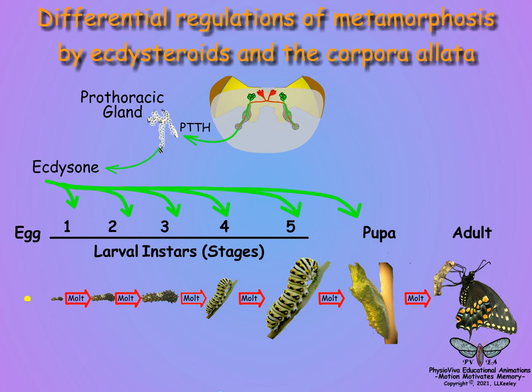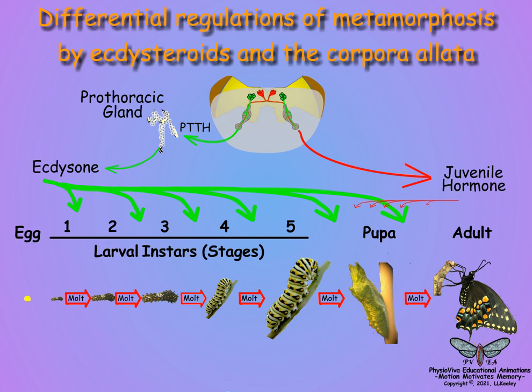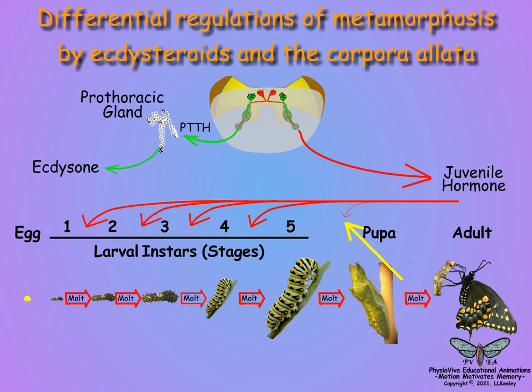The product of the molt — whether larval-to-larval, larval-to-pupal, or pupal-to-adult — is dependent on the production of juvenile hormones by the corpora allata. Note that the arrows for juvenile hormone at the larval-pupal molt are much smaller than for the larval-larval molts, and the arrow for juvenile hormone is absent for the pupal-to-adult molt.